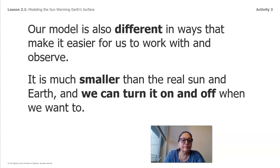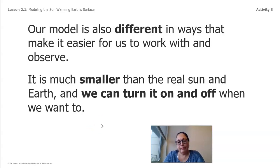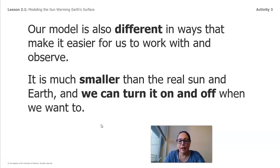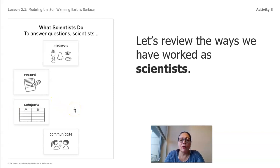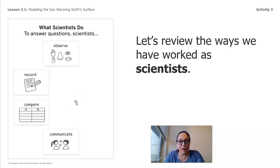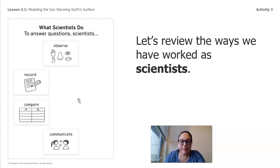Our model is also different in ways that make it easier for us to work with and observe. It is much smaller than the real sun and Earth, and we can turn it on and off when we want to. We can't bring the sun inside the classroom, so scientists use things that might do the same thing. By using the model, it's just like having the sun reflect on a surface. Going back to what scientists do: they observe, they record, they compare — comparing the two parts — and then we talk about it, which is what we did today.